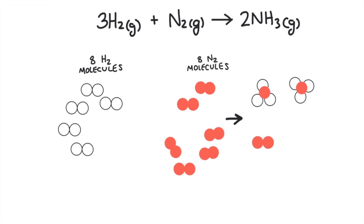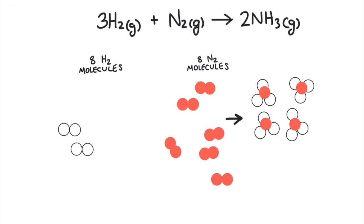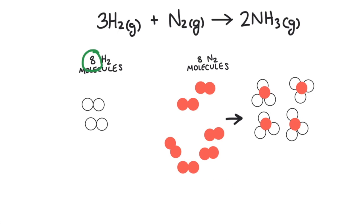If two molecules of nitrogen gas react, six molecules of hydrogen gas would be required. If three molecules of nitrogen gas react, nine molecules of hydrogen gas would be required. But we don't have nine molecules of hydrogen gas — we only have eight. So the most that we could react would be two molecules of nitrogen gas and six molecules of hydrogen gas, producing four molecules of ammonia gas.